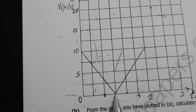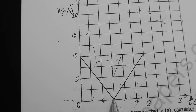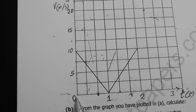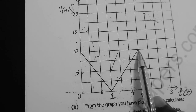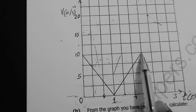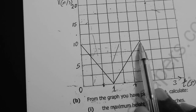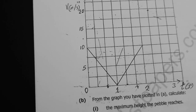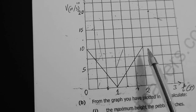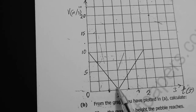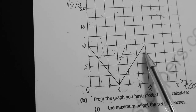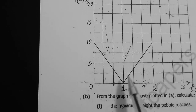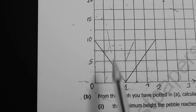At maximum height the pebble momentarily stops, then falls down under gravity, taking another second to return to its starting point — two seconds total. As it falls, it accelerates under gravity, so speed increases. The graph starts at 10 m/s, drops to zero at 1 second, then rises again to 10 m/s at 2 seconds.